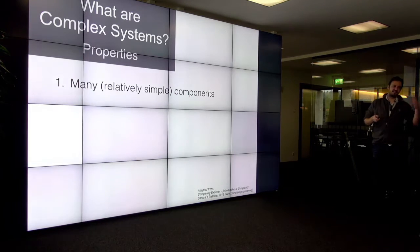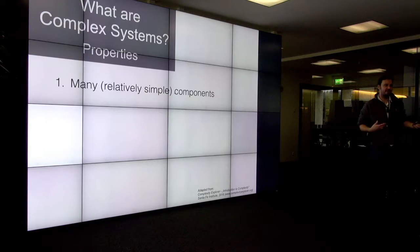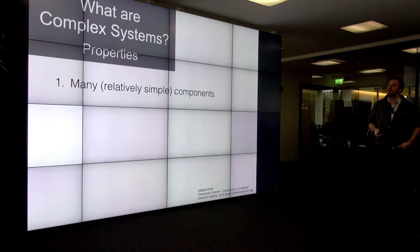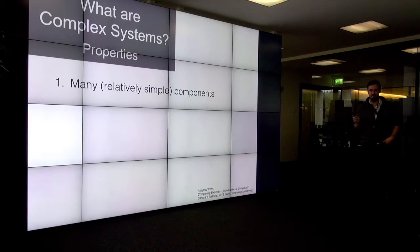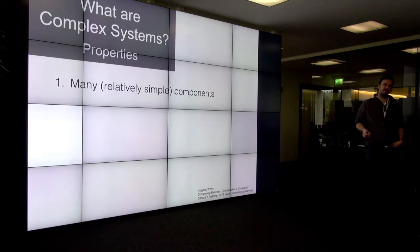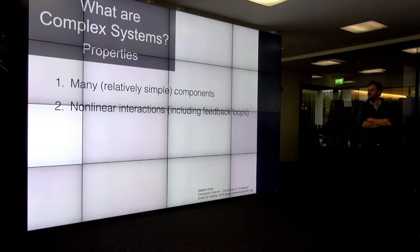Based on these examples, I want to provide a list of typical characteristics of a complex system. There's of course no common definition, but these points are the most important ones that many people would agree upon. First, a complex system consists of many components. These components are relatively simple — in a city this might be the people, the buildings, or road segments. Second, all these components are interacting with each other, and they might interact in a nonlinear way.